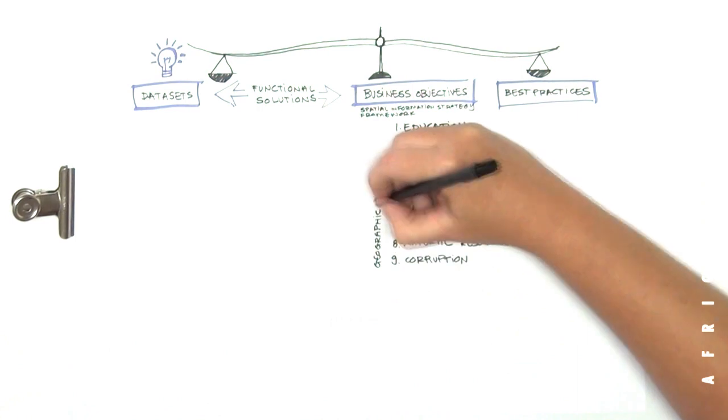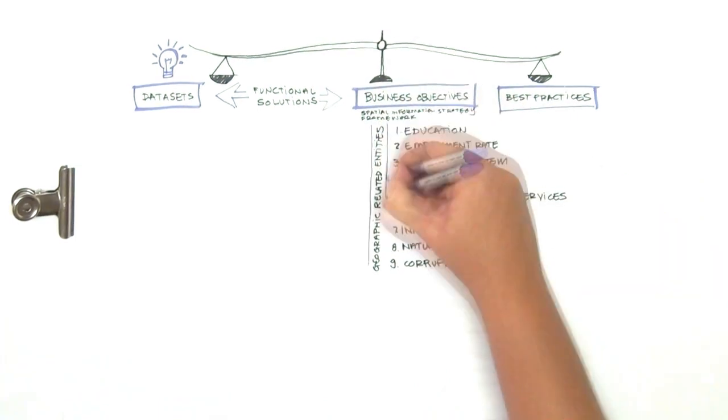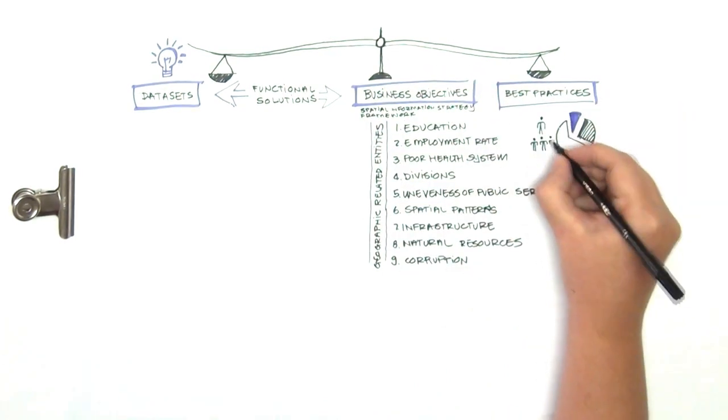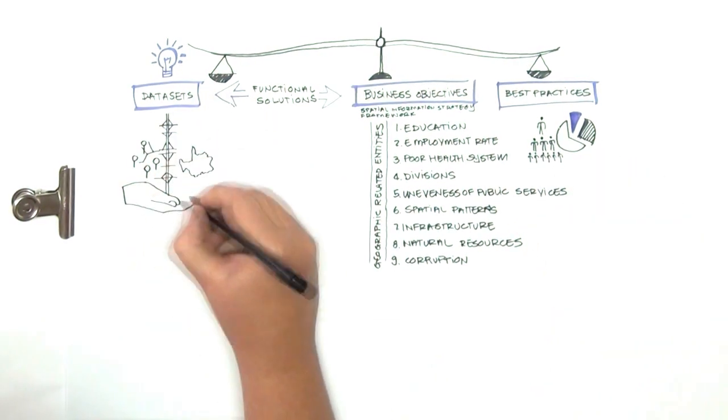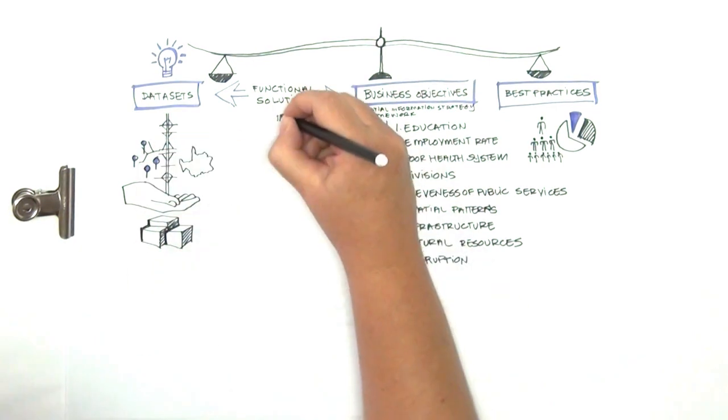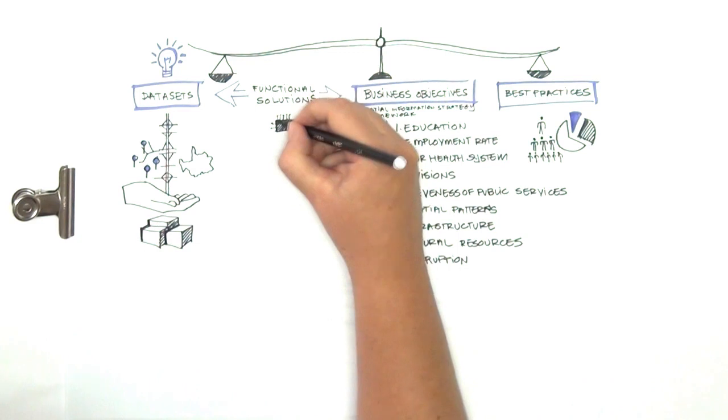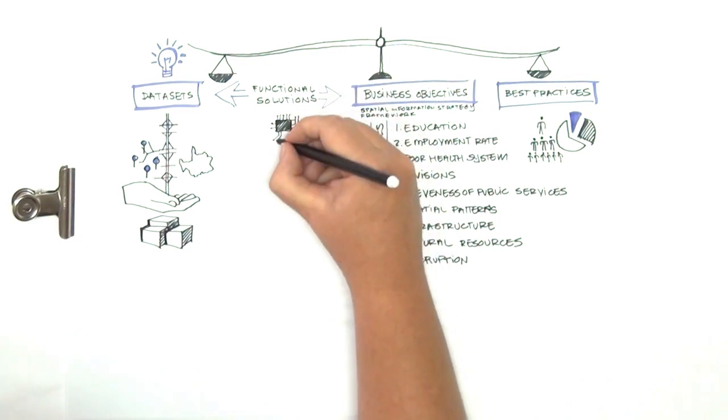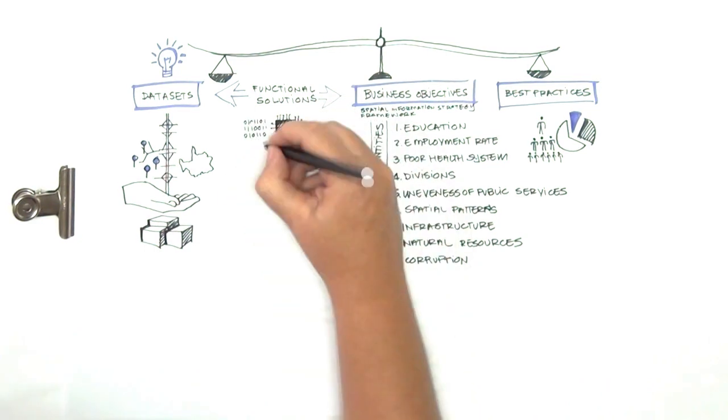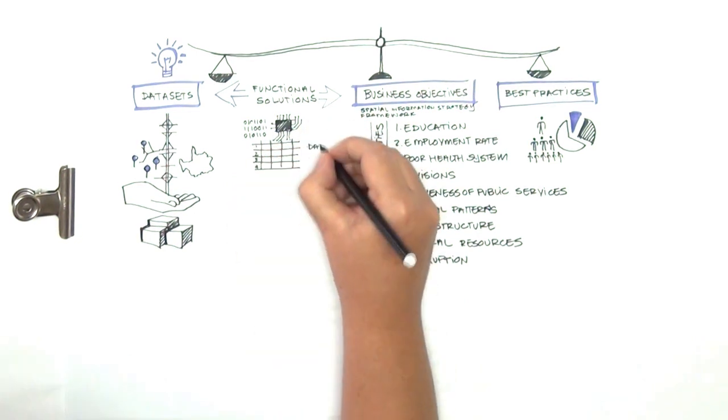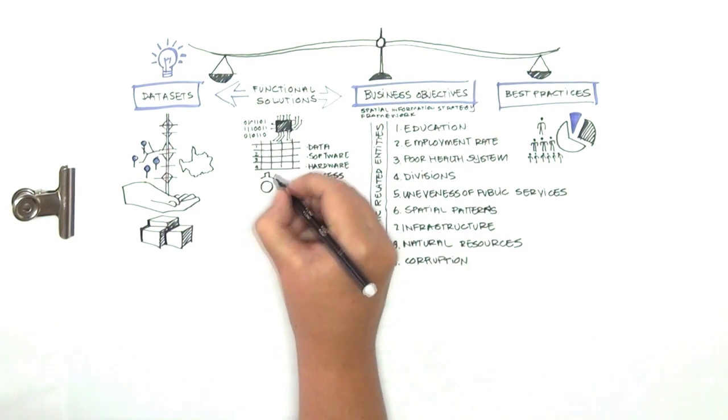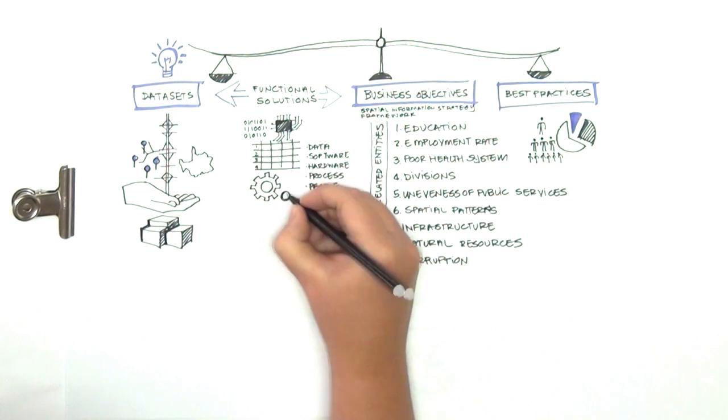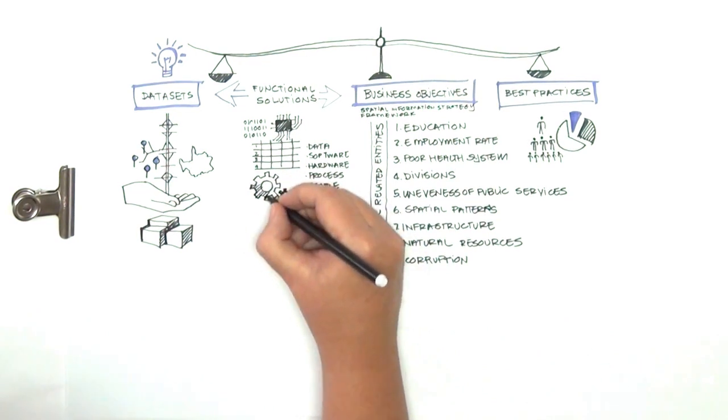How do we apply the Spatial Information Strategy Framework? We go through a balancing act of reviewing best practice, looking at the geographic and other datasets that enable specific questions related to the objectives, and finally, build the solutions that enable them. These solutions can then be listed and prioritized into a roadmap. In GIS, they usually relate to data, software, hardware, processes and people. The solutions are literally the gears that make the whole engine work. They bring together the datasets with the objectives they enable and validate this against best practice.